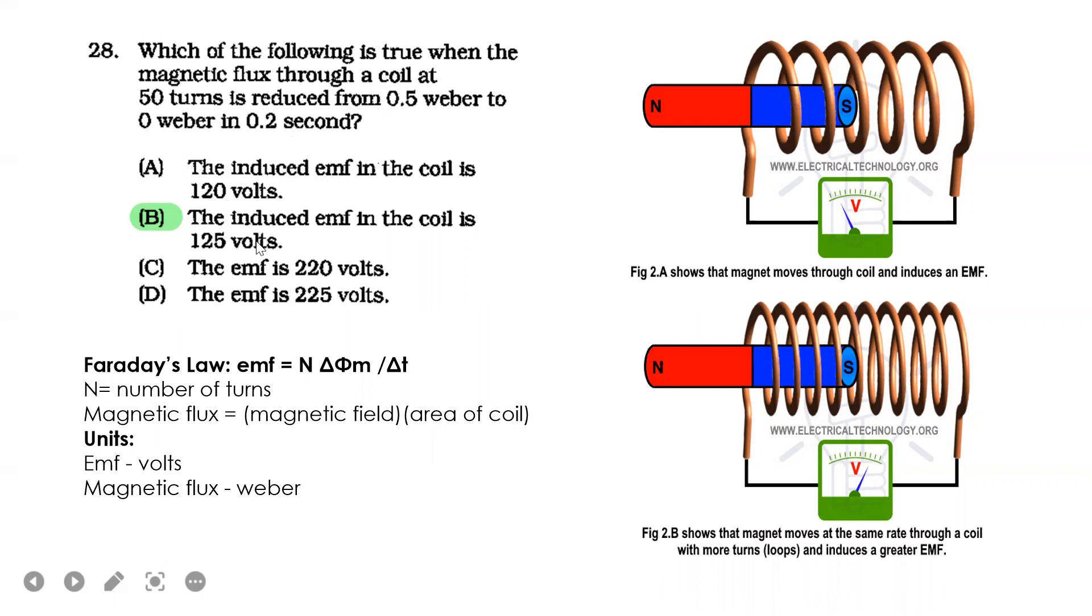Is it 120, 125, 220, or 225? It's basically asking what is the EMF, but phrased as 'which is true.' You might think you need to read all the options, but they all show EMF, so you just need to know which value is correct. Electromotive force is calculated as EMF equals N (number of turns) times delta magnetic flux over delta time.